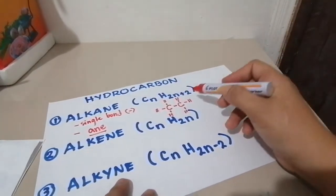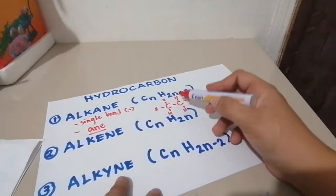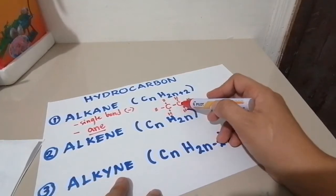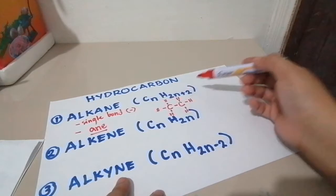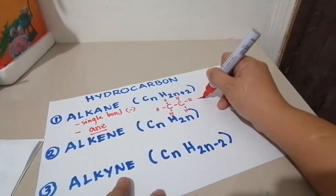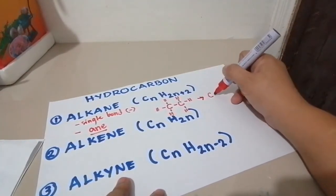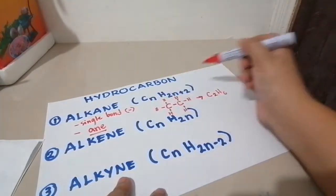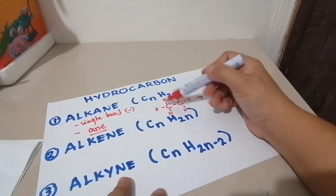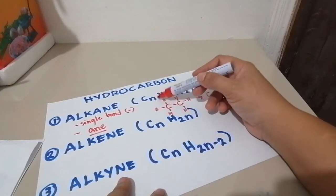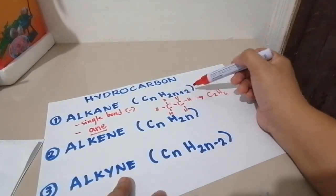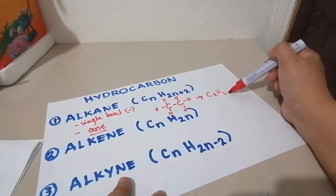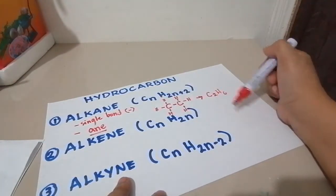Now, to check if this is correct, we have 2 carbons here, so if we use the formula, we will get C2H6. Since we have 2 carbons, N is 2, 2 times 2 is 4 plus 2 is 6. So the hydrogen is 6 and the carbon is 2.